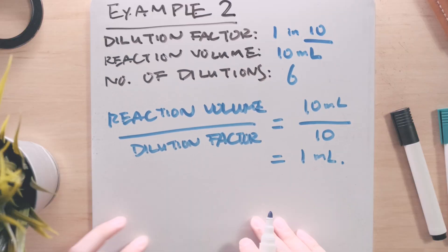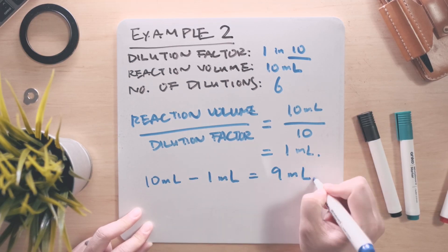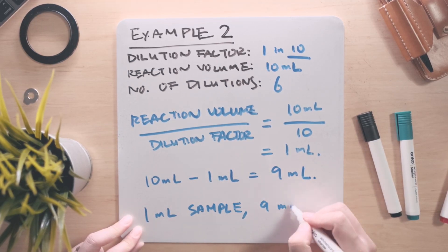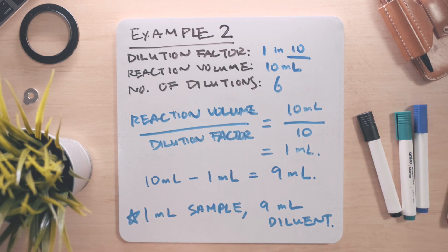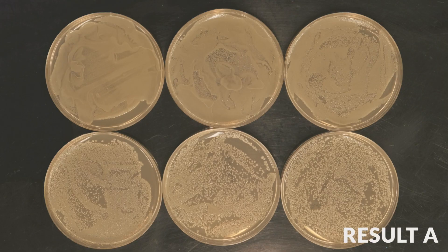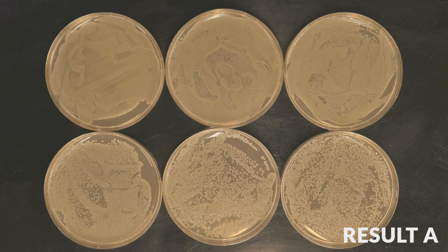So we need to add 1 milliliter of bacterial culture to each bottle. To make up the total volume to 10 milliliters, we need to add 9 milliliters of sterile saline in each dilution. To visualize the effect of the serial dilutions, we will plate out each bottle onto an agar plate to observe the number of bacterial colonies that grow. This time, let's look at the results first. We have two sets of results, A and B.